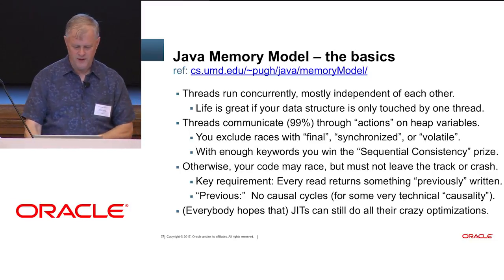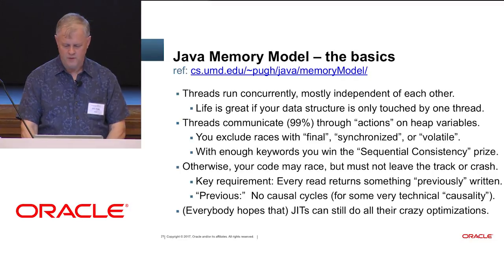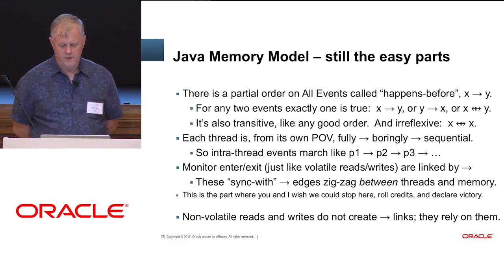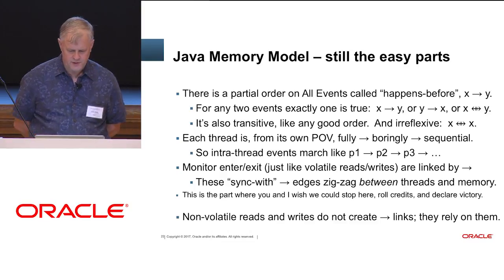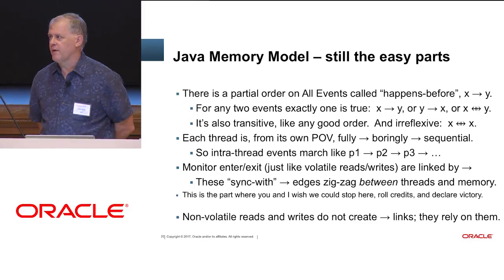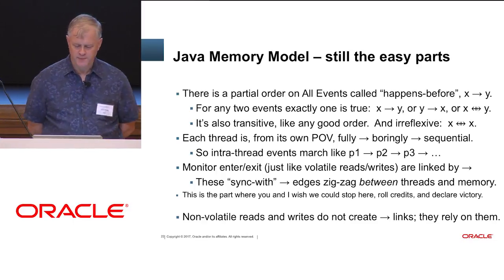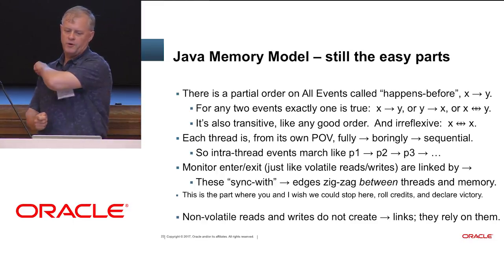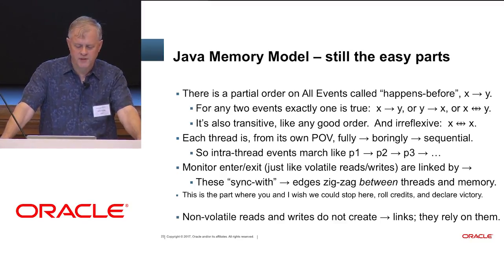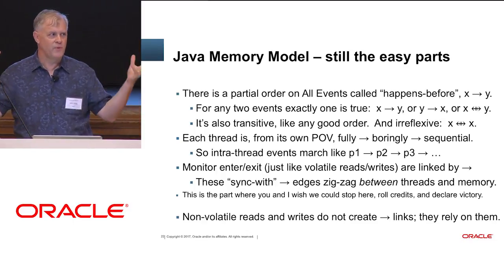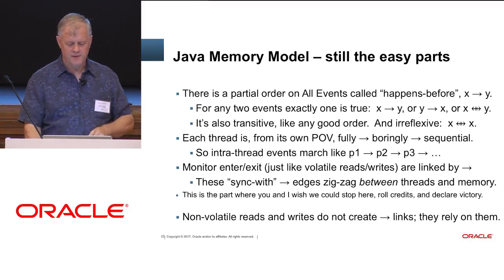Recent C++ compilers are not so friendly. There's something called happens-before, a concept from Leslie Lamport — that guy's been all over this kind of stuff for three decades. Happens-before: one event happens before another, or they're not related at all. Those are the only three possibilities. It's a nice irreflexive partial order. Every thread is fully ordered — boring, sequential. Inside a thread, events march in strict sequence. Monitor exit, monitor enter, volatile reads and writes — they are also linked by this relation. So we're building up a partial order. It's going to help us stay sane, we hope.